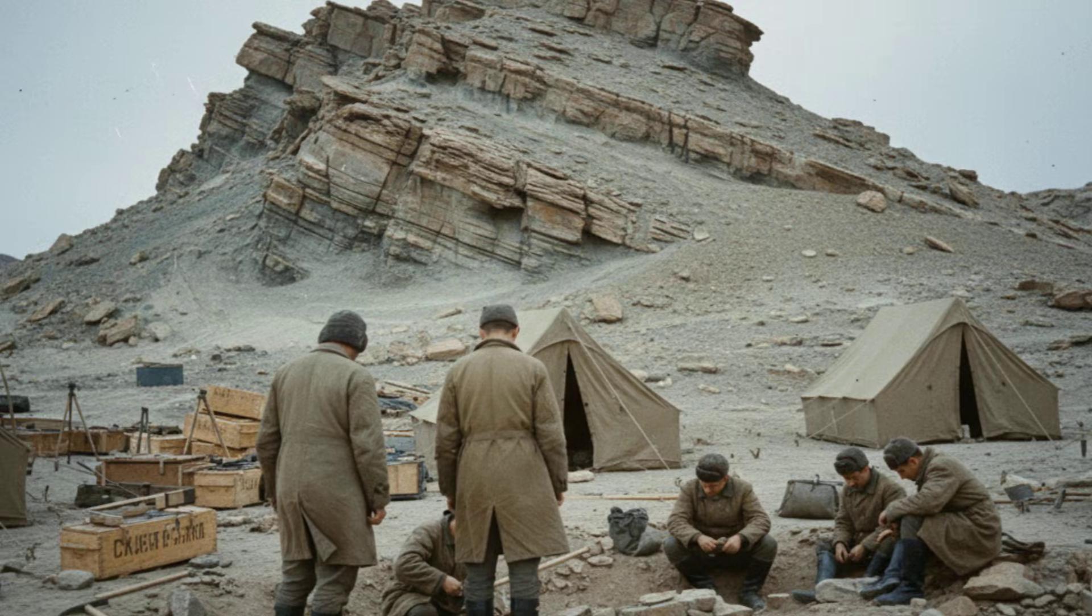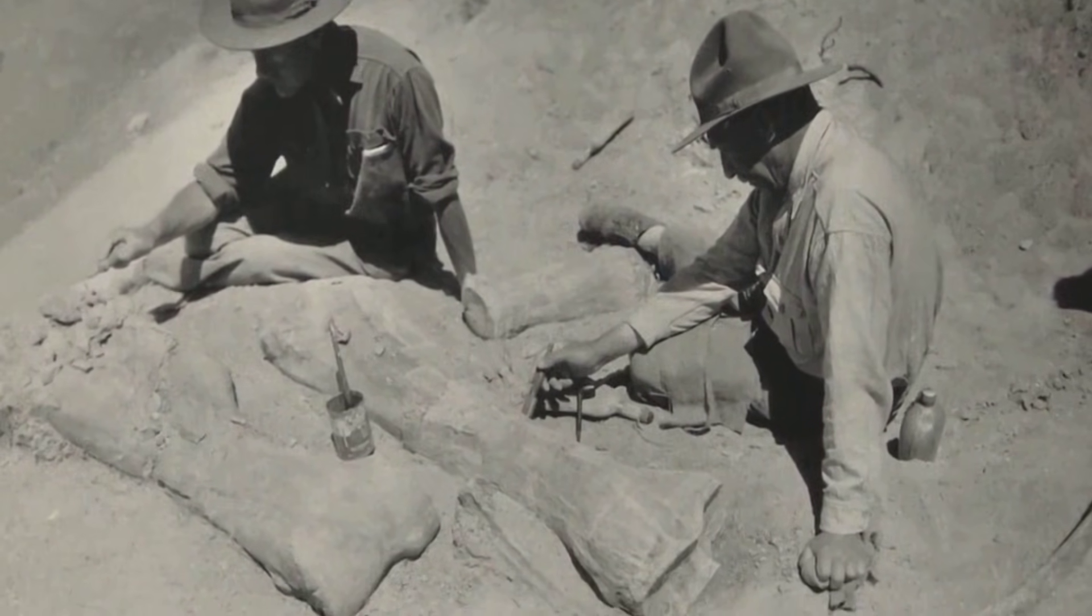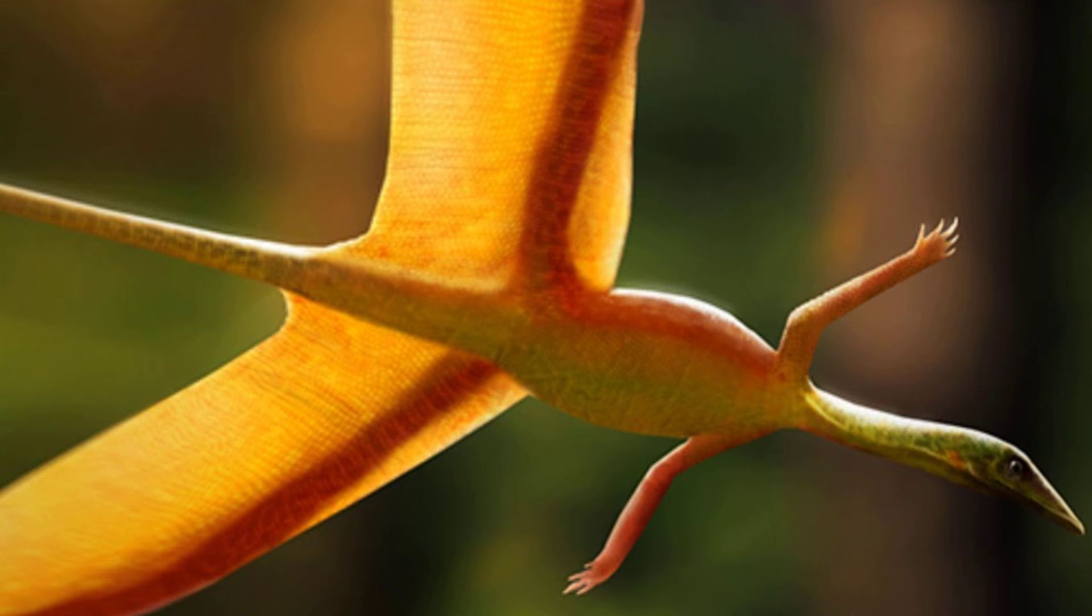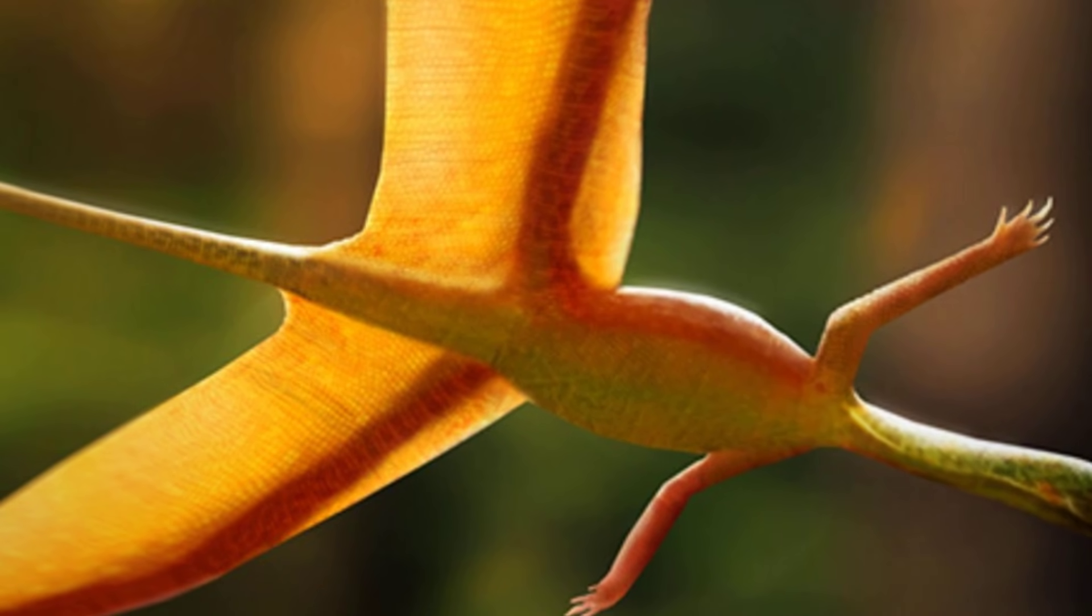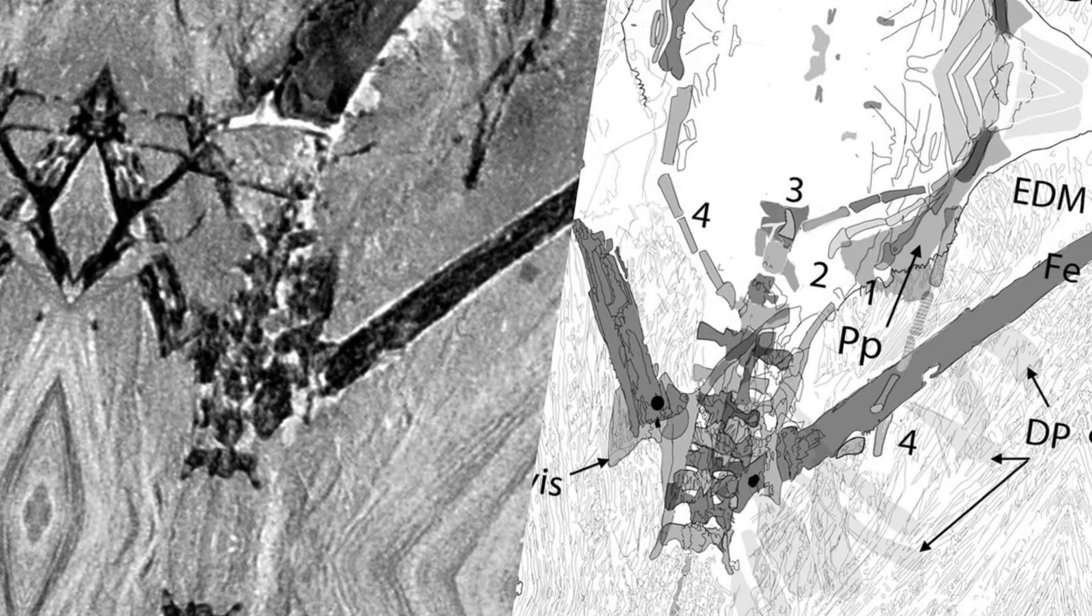Kyrgyzstan, 1965. A Soviet paleontologist cracks open a slab of rock from the Madogen formation and finds something that should not exist. A reptile frozen mid-glide, wings stretched wide, but the wings are not on its arms. They are on its legs.